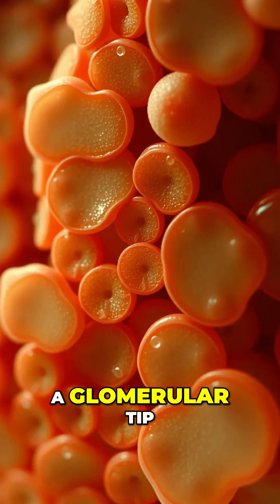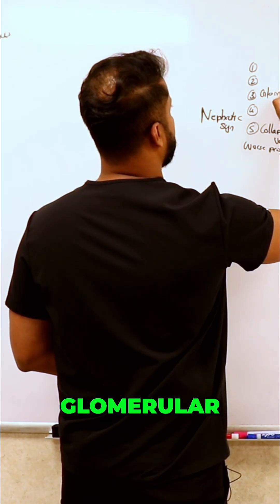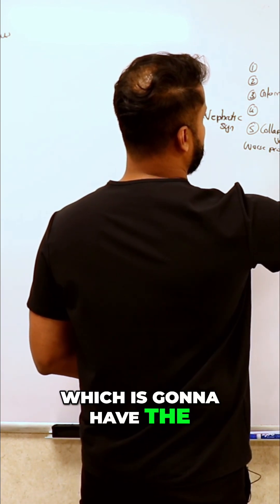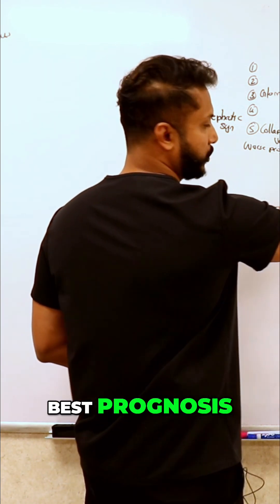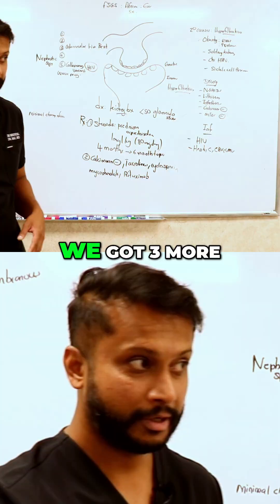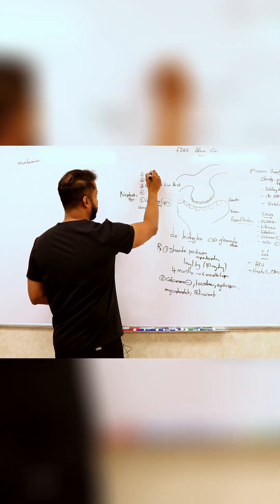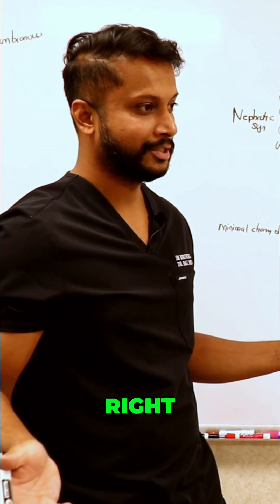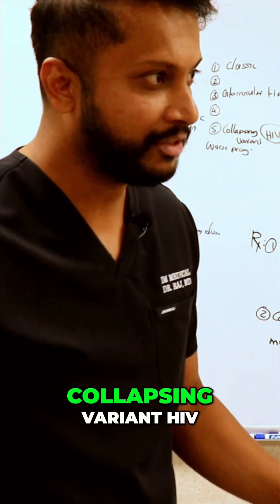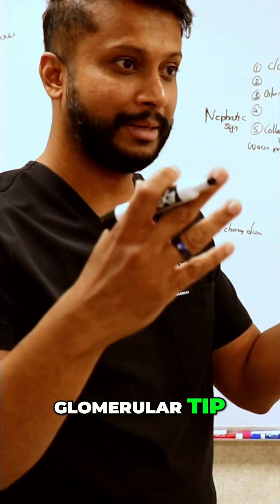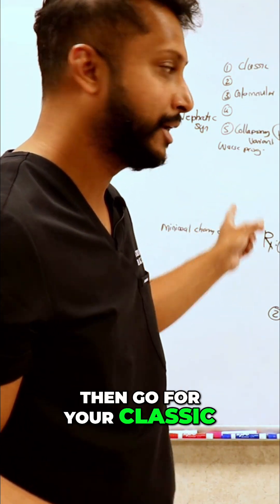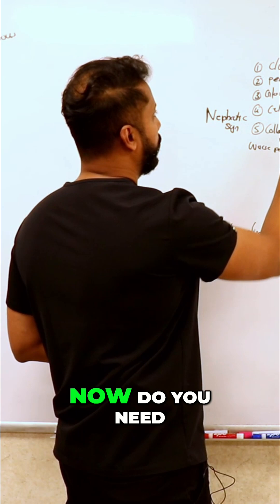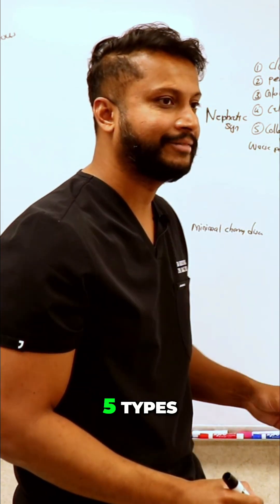If the collapsing variant has the worst prognosis, what has the best? There is a variant known as the glomerular tip variant, which has the best prognosis. The other three types are the classic variant, perihilar, and cellular.